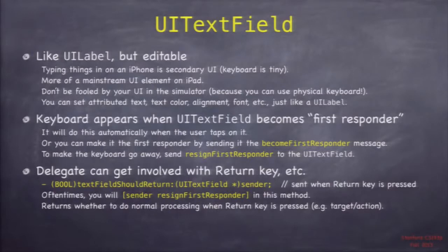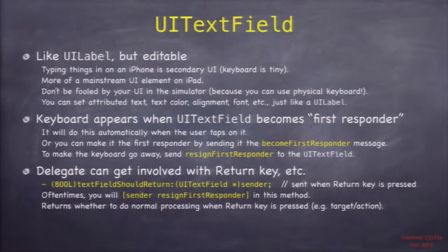There's a delegate for UITextField, unlike UILabel, and there's a lot of stuff there. For example, when the keyboard presses the return key while that text field is being edited, the text field's delegate receives the message textFieldShouldReturn. Return yes or no whether it should send its target action. In there you can call resignFirstResponder so that when someone hits return, the keyboard goes away — which is usually what users expect.